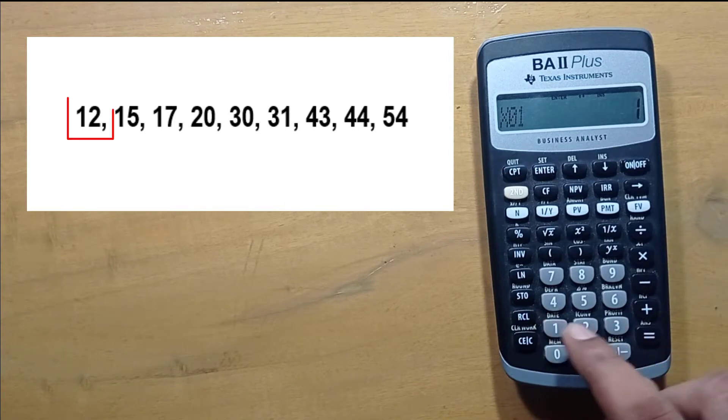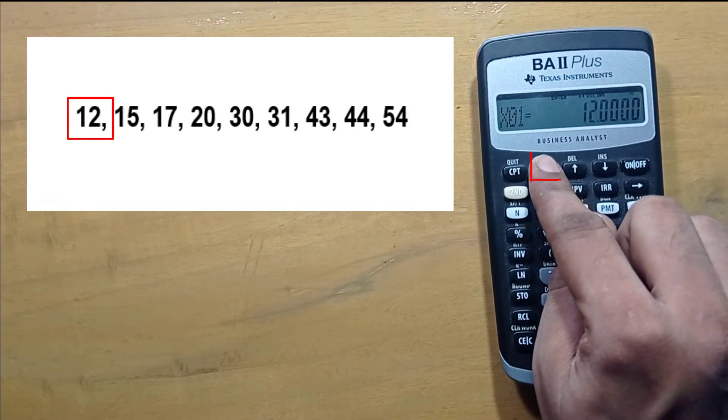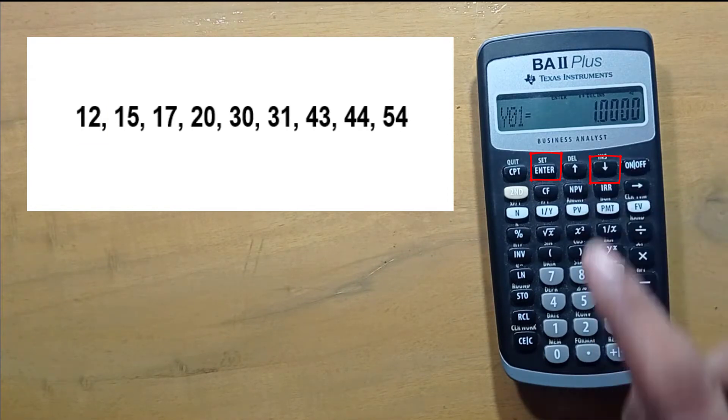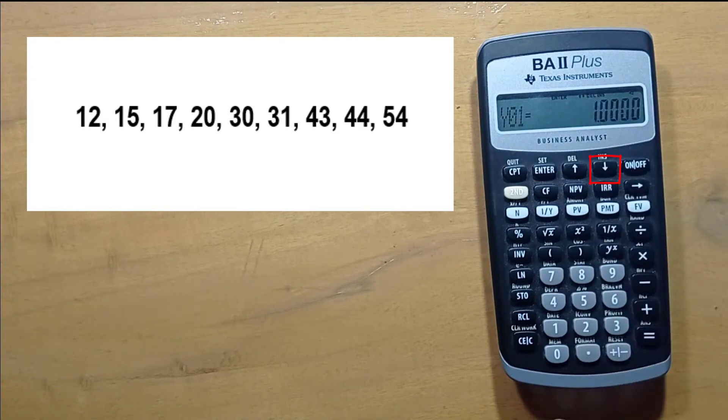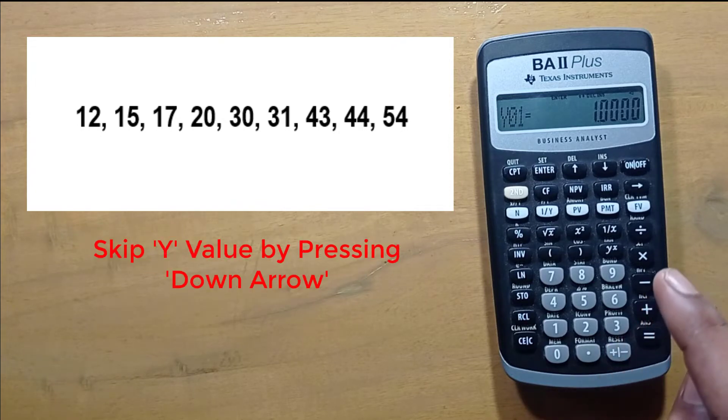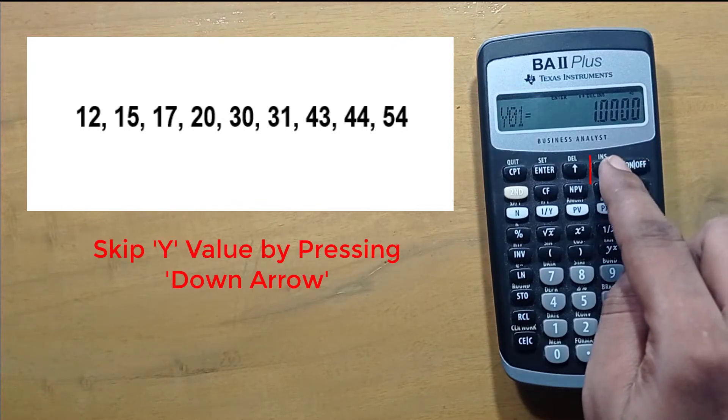Now input your data. 12, press enter, then the down arrow button. Since it is a single variable data set, we don't have any y value, we only have x value. So we'll just skip it by pressing the down arrow button.